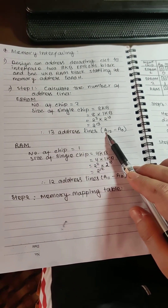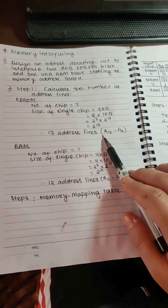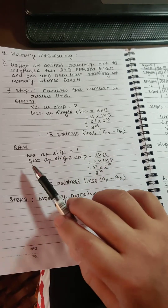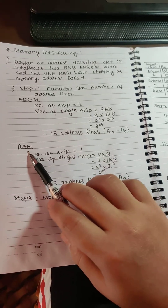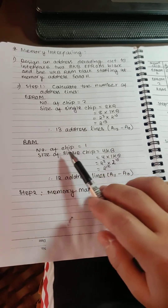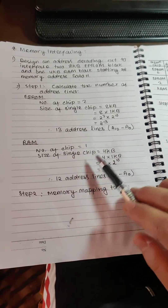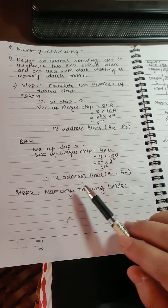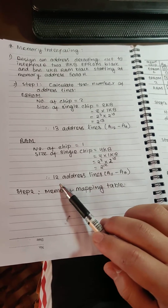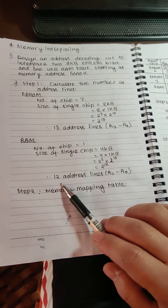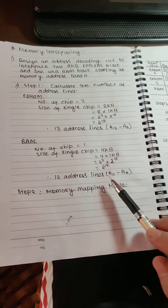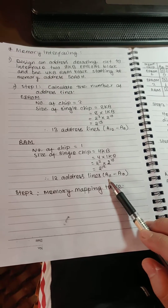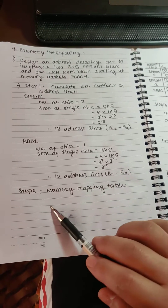There are 13 address lines for the EPROM, from A0 to A12. The size of the RAM is similar, and we calculate the RAM address lines from A0 to A11. In step 2, we are going to design a memory mapping table.